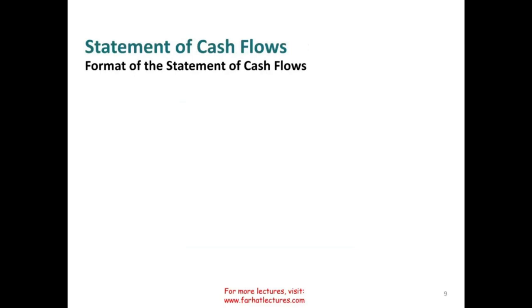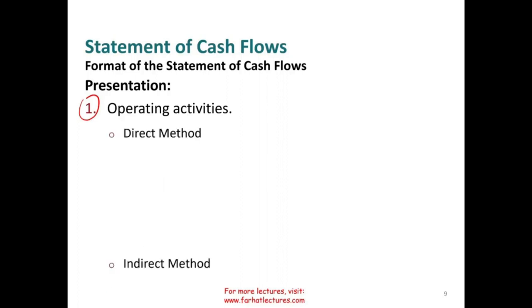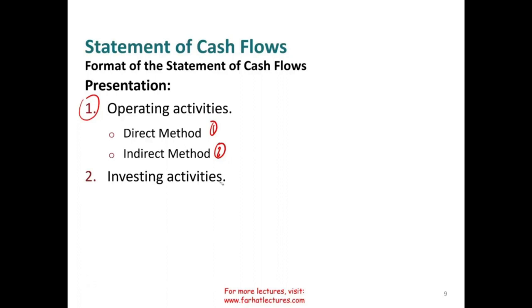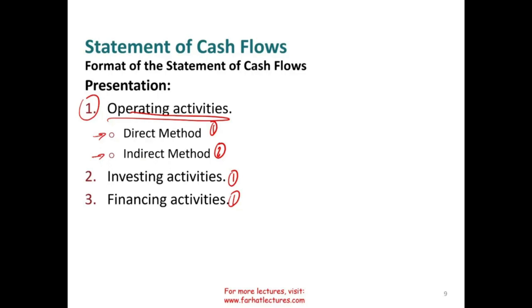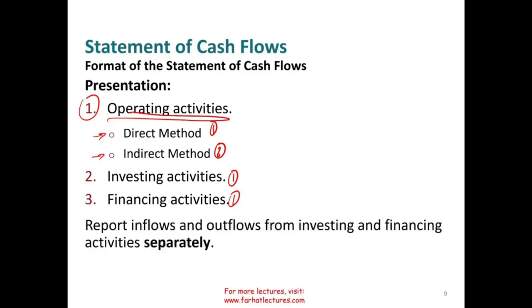So, the format of the statement of cash flow — what does it look like? The first section is operating activities, which can be prepared using two methods: the direct method or the indirect method. The second section is investing activities — there is only one method. And the financing activities also has only one method. For non-cash transactions, those would be shown separately.